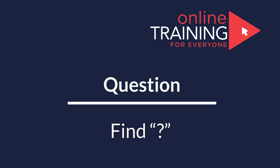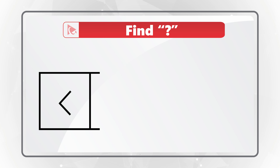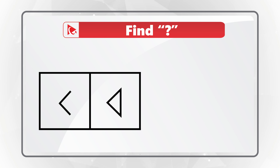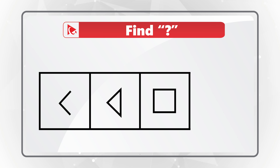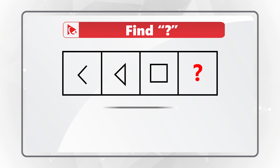Here is a wonderful question to test your analytical skills. You are presented with a series of shapes in boxes: the first box has an arrow pointing left, the second has a triangle pointing left, the third has a square, and then comes the box with the missing shape. You have four different choices: A, B, C, and D.